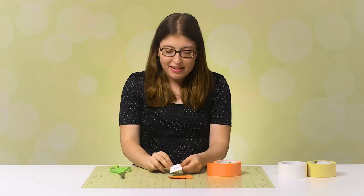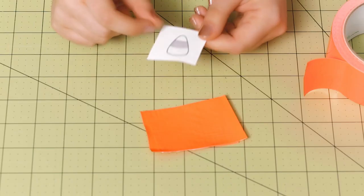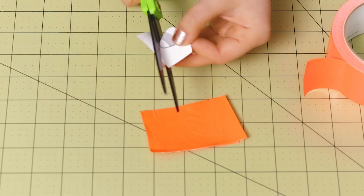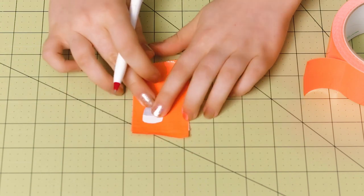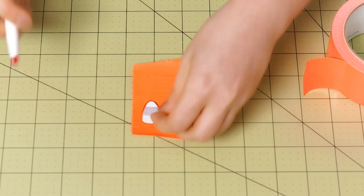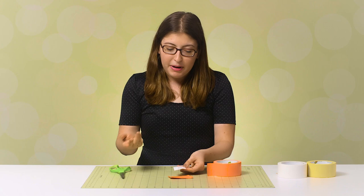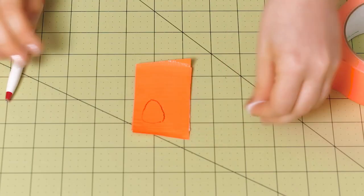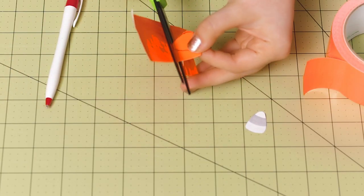Now, I've printed out an image of a piece of candy corn to use as a pattern so that I can trace it and have the exact same shape for each of my necklace charms. If you're not worried about that, you can always freehand it. But I decided to trace mine. All right. Once you have your shape in place, you can just cut it out.